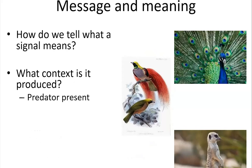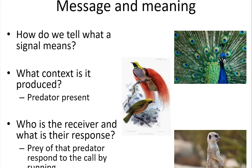For example, meerkats and lots of small animals have alarm calls. You might notice that a sentinel produces a certain call when a hawk flies over, and then you notice the response of the receiver, which is to run for cover. Those two things go together like a hand in glove. For sexual signals, the context is always a male in the breeding season, the receiver is a female, and the response is to accept or reject him. So usually the first pass we make when trying to figure out what a signal means is to figure out the context it's produced in and what the response of the receiver is.